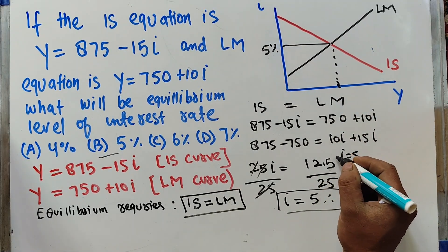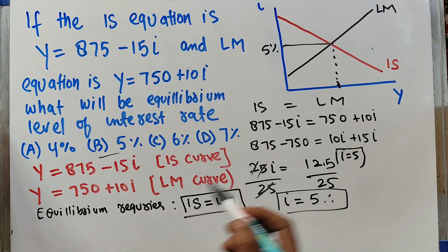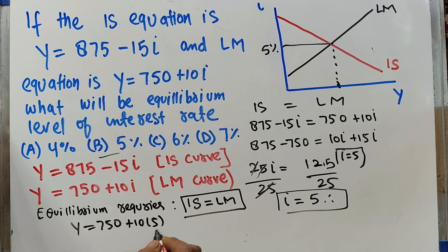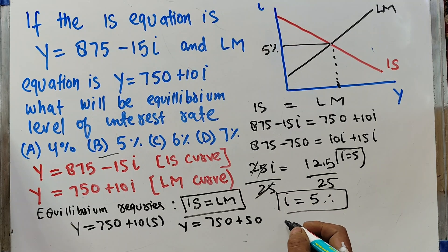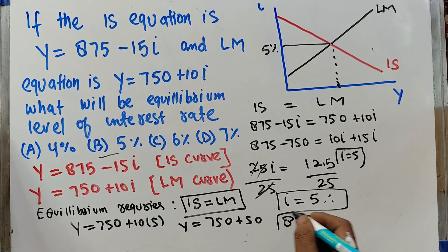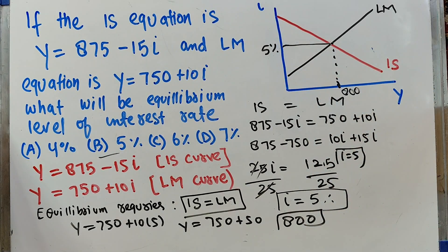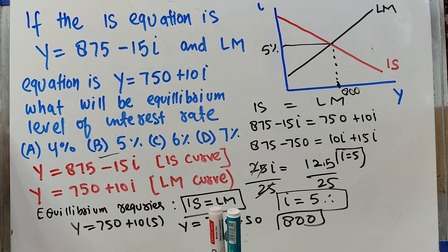Plugging I = 5 into the equation, Y = 750 + 10(5) = 750 + 50 = 800. So 800 is the equilibrium level of output or real GDP in this economy, corresponding to the 5% interest rate when IS and LM are in equilibrium.